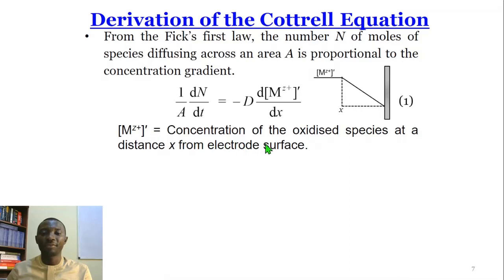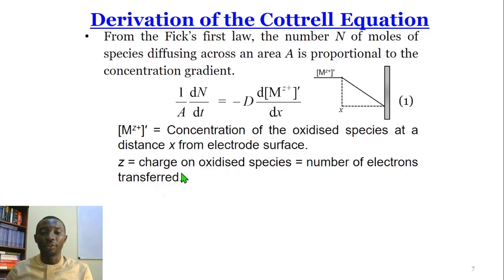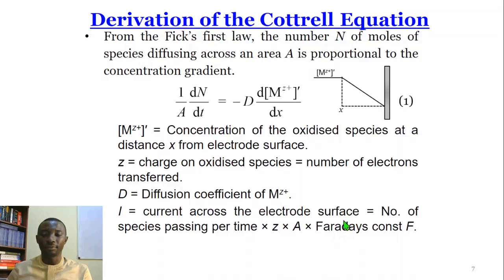[M^z+]' represents the concentration of the oxidized species at the distance x from the electrode surface. z represents a charge on the oxidized species, which happens to equal the number of electrons transferred. D is the diffusion coefficient of the oxidized species. The current across the electrode is equal to the number of species passing per time × z × the area of the electrode × Faraday's constant F. We can write this mathematically in terms of equation 2. And because we've got this expression here, and we've got that there, and this expression is equal to this, we can substitute this into this equation. And that gives this expression.